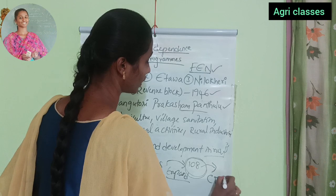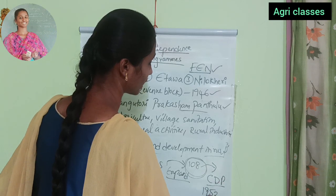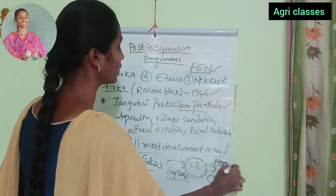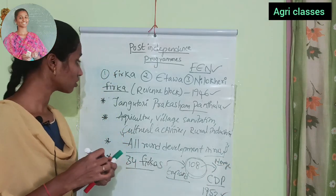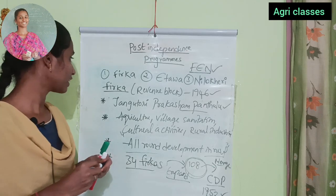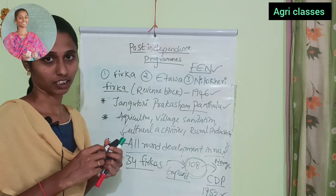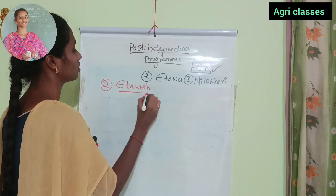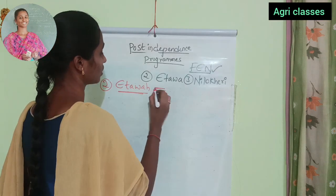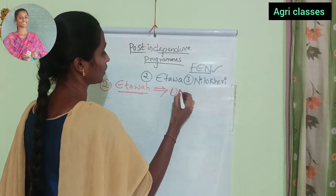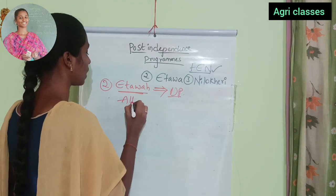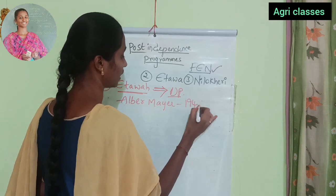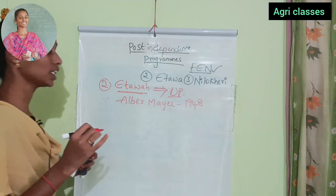That's all about the FIRKA project. It was later merged into the Community Development Program in October 1952. Next, we will discuss the ETAWA project. This project is in U.P. — Uttar Pradesh. The concern person is Albert Mayer, and it started in 1948.